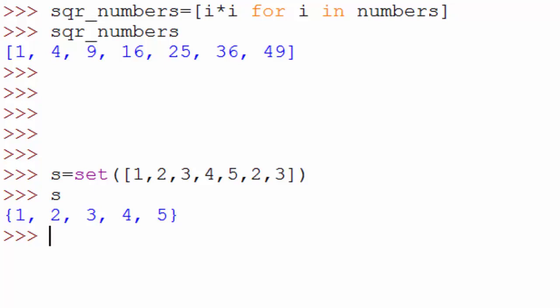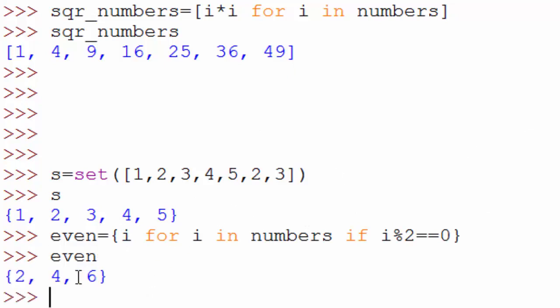Now I want to do the same thing. I want to generate another set which has only even numbers. So the syntax is exactly same except that instead of using square bracket you are using a curly bracket here. So I will just do the same thing. So just copy paste this line here and when you print even you can see here it has only even numbers.